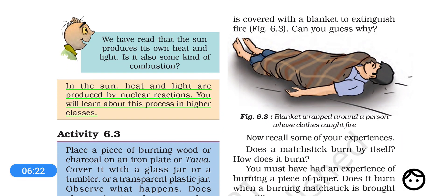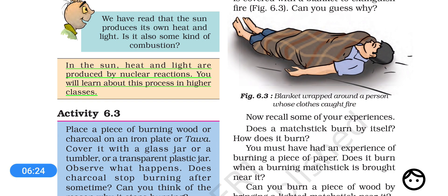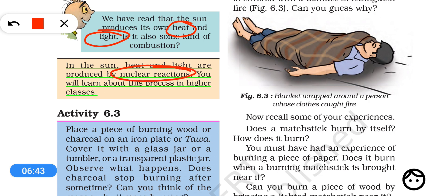The sun also produces heat and light. What is the source of this heat and light? Actually, in the sun there is no combustion; the heat and light are produced by nuclear reactions. We need not discuss nuclear reactions here — we will discuss them in higher classes.